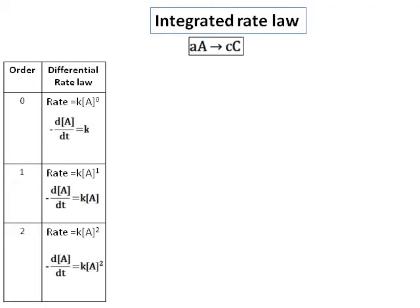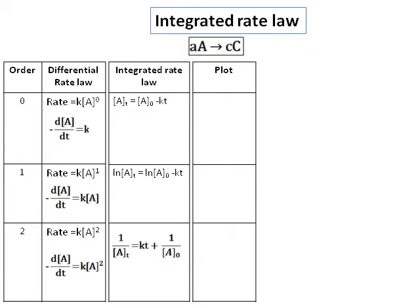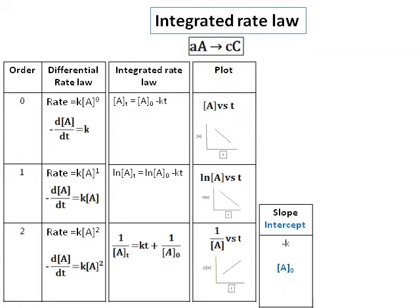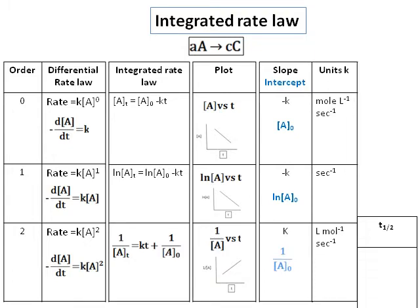This video is going to focus on the integrated rate law. Before we go on to the integrated rate law, we will revise on what we have learned so far. We have something called the order of the reaction and a differential rate law given in column 2. The corresponding integrated rate law is given in column 3, and it is in the form of y equals mx plus b — the equation of a straight line. Plots will give you straight lines as shown in column 4, and the slopes and intercepts give you the value of k and the initial concentration.